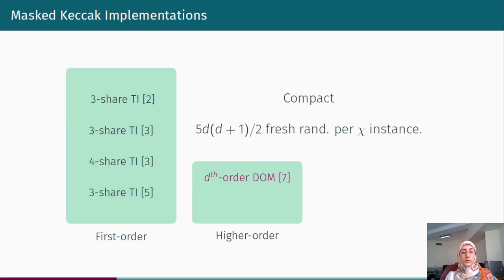There is only a d-th order DOM implementation of Keccak in higher-order group. Compared to the td-plus-1 scheme, this design is compact. However, it requires a notable number of fresh random bits per Chi instance. Let's say for second-order implementation, this amount equals to 15 bits per Chi instance.